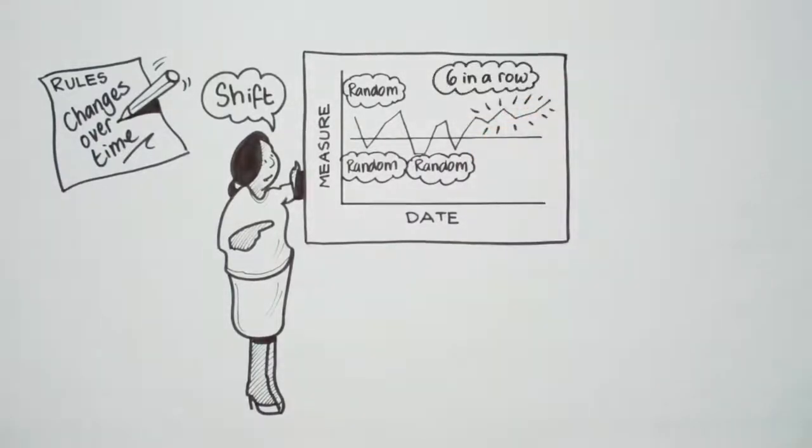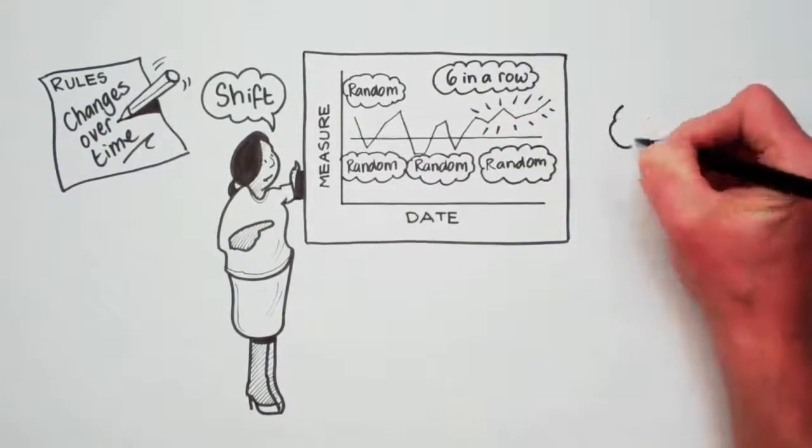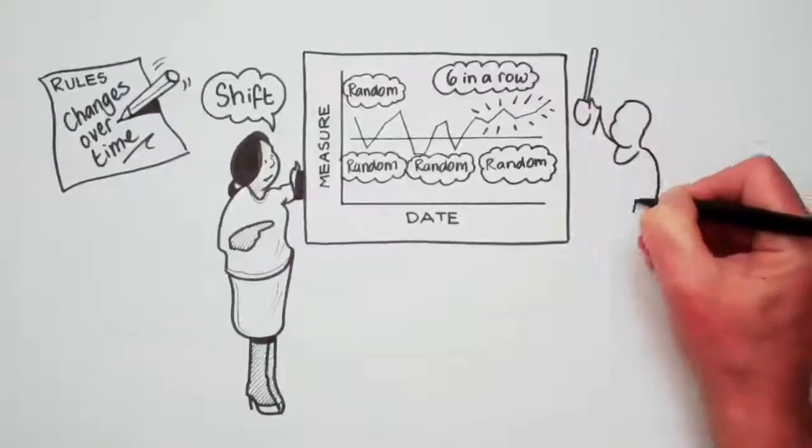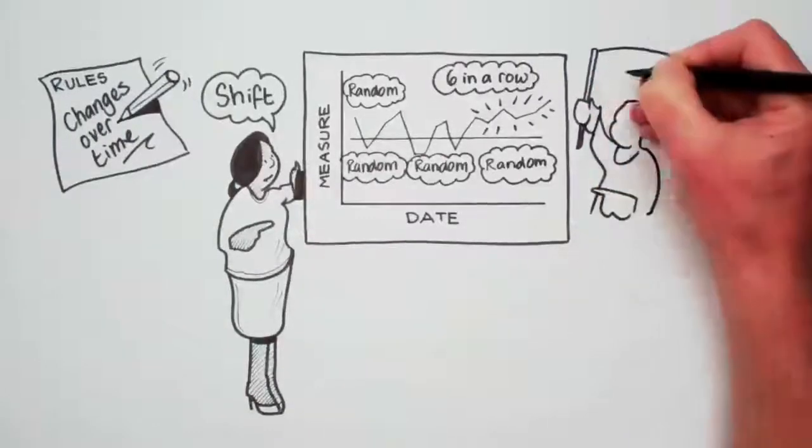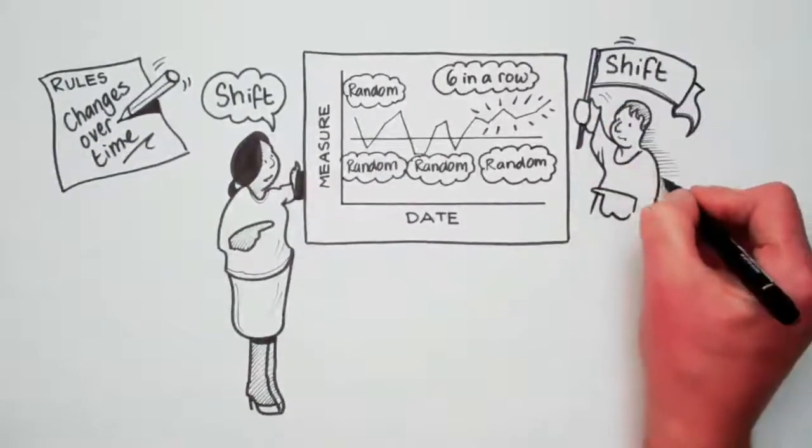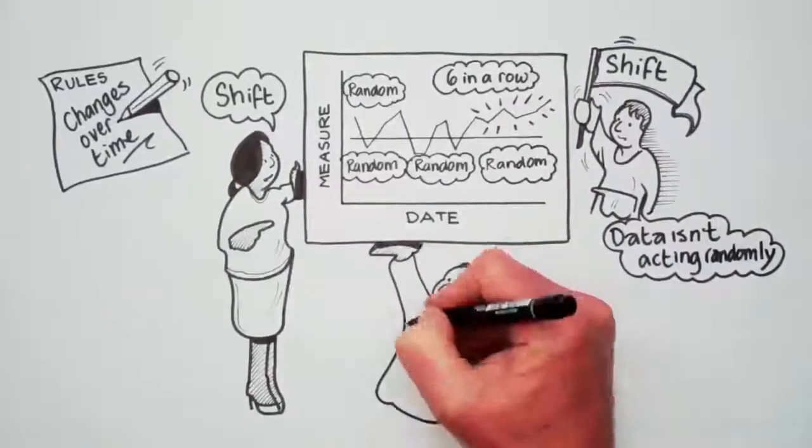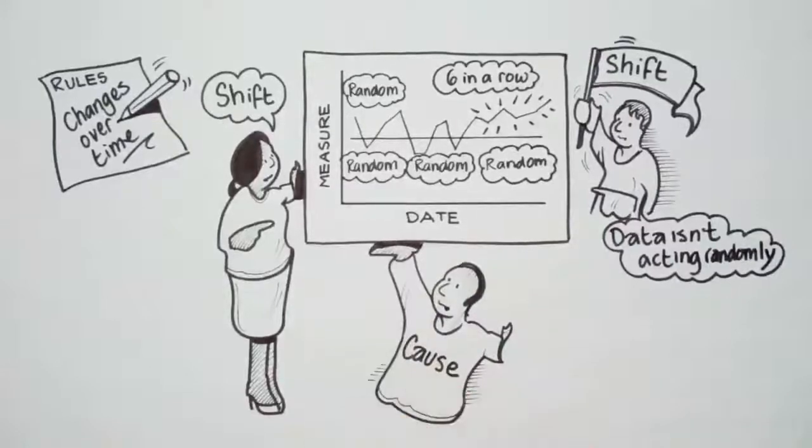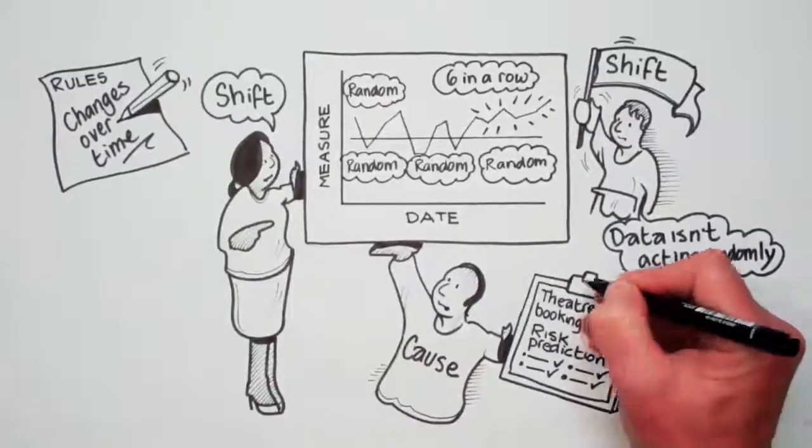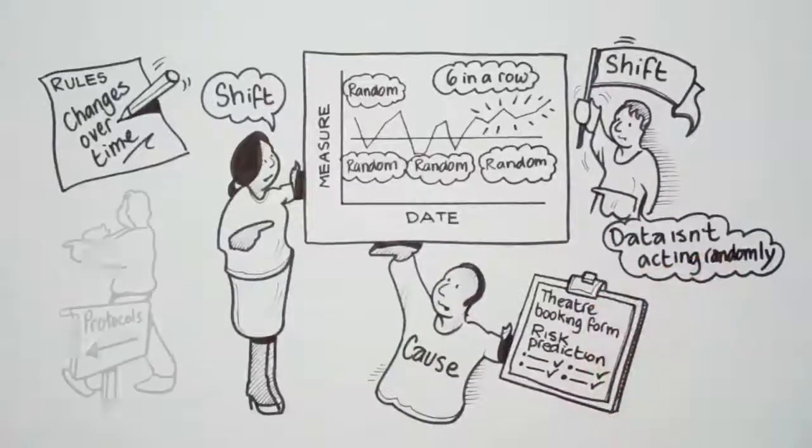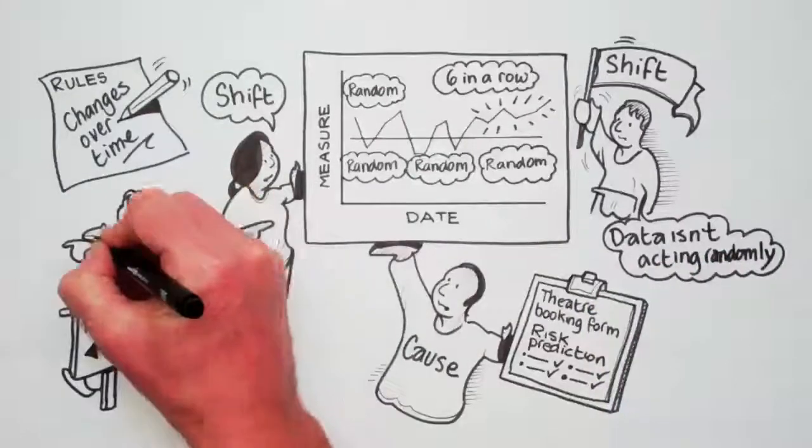So you have random, random, random, and then all of a sudden you have six in a row on one side of the median line, and then it goes random again. This run of six data points in a row above the median line signals a shift and shows that the data isn't acting randomly. It means there is a cause underlying that data change. Maybe you've changed your theater booking form so risk predictions been done more often, or perhaps some new staff members are not following your protocols and your standards have slipped.